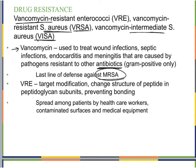With vancomycin-resistant enterococci (VRE), they use target modification — they change the structure of the peptide in the peptidoglycan subunits, which prevents bonding of the vancomycin. This is often spread among patients by healthcare workers through contaminated surfaces and medical equipment, making it another example of a nosocomial infection acquired in the hospital.